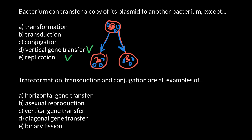Conjugation would be an example when two bacteria come into close contact and may exchange genetic material, including plasmids. So this is also a correct answer.